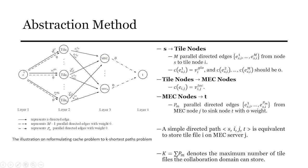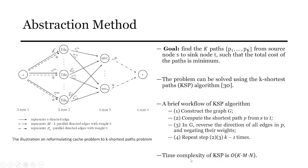A simple directed path SIJT is equivalent to storing tile field I on MEC server J. K denotes the maximum number of the tile fields on collaborative MEC store. After neglecting the weights of all edges, the original problem is formulated as a K-shortest edge disjoint path problem. Our goal becomes to find the K-paths from S to T such that the total cost of the paths is minimal. And the problem can be solved by the K-shortest paths algorithm.